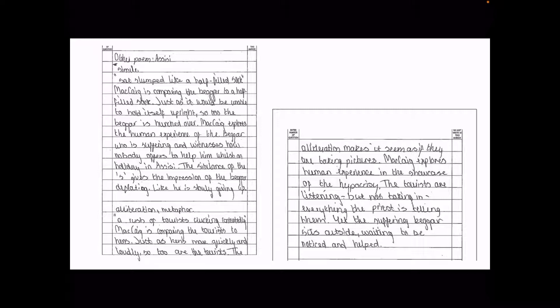Then we have the other poems. The structure makes it clear what the other poem is because the marker has a marking scheme that says: if they talk about Assisi this is what you need to be looking for; if they talk about this poem this is what you need to be looking for. It's a very vague marking scheme, so the more straightforward and clear you can make it the better it will be for you and the marker. Make it as easy as possible for the marker. Write 'commonality' at the top, label your marks, name the poem in front of you, name the other poems. Don't make them hunt.